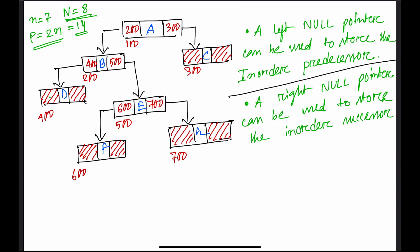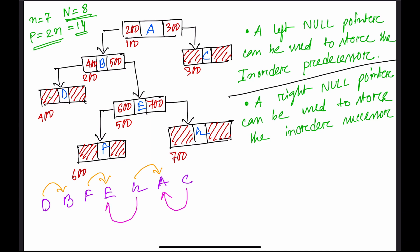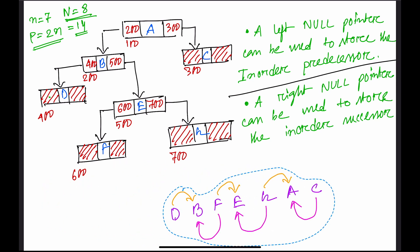A left null pointer stores the inorder predecessor and the right null pointer stores the inorder successor. The inorder traversal here would be: D, B, F, E, G, A, C. So the right pointer of D points to B, right pointer of F points to E, right pointer of G points to A, left pointer of C points to A, left pointer of G points to E, and left pointer of F points to B.